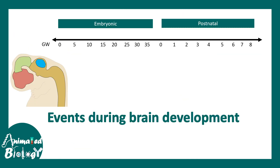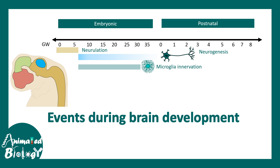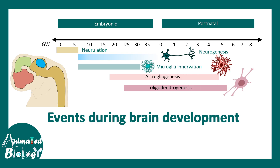This particular timeline quickly summarizes the process of cell birth in the brain development process. Neurulation happens at a very early stage, within the fifth week of gestation. Then there is neurogenesis, microglial invasion — microglia are not born from neuronal stem cells but come from the mesodermal lineage. Then there is astrogliogenesis, followed by oligodendrogenesis. Synaptogenesis happens around gestational week 16 and continues even after birth.